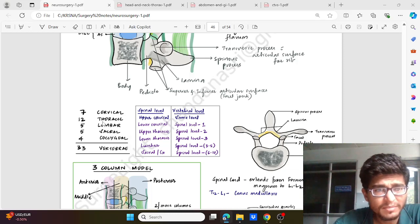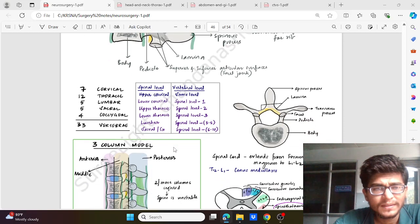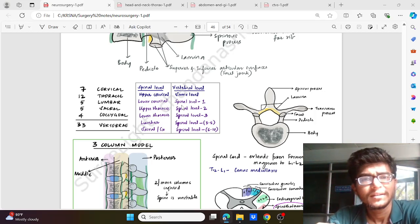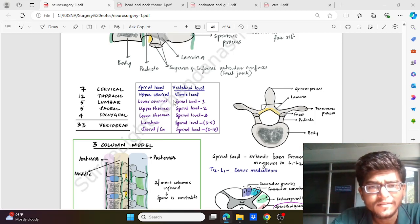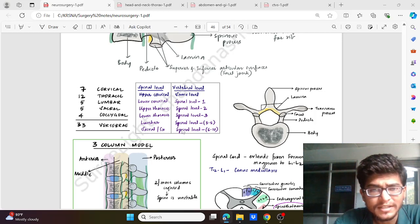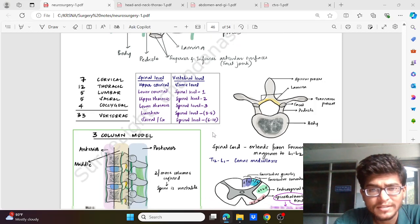Considering the vertebras, we have 7 cervical vertebras, 12 thoracic, 5 lumbar, 5 sacral, and 4 coccygeal. The sacral and coccygeal joints fuse, and totally we have 33 vertebrae. The spinal level and the vertebral level: in the upper cervical it is same. In the lower cervical, the vertebral level is spinal level minus 1. In the upper thoracic, the vertebral level is spinal level minus 2, and in the lower thoracic it is spinal level minus 3. In the lumbar it is spinal level minus 3 to 5, and in the sacral level the vertebral level is spinal level minus 6 to 10.